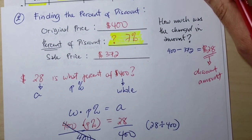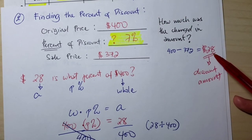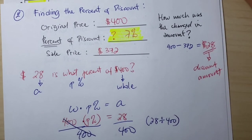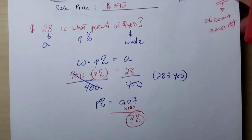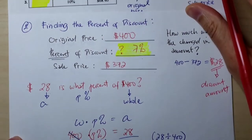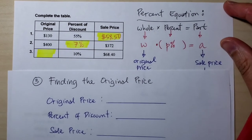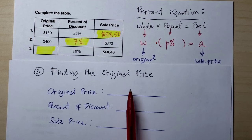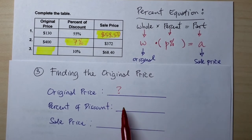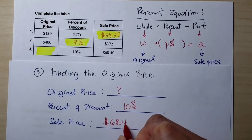So if you take 7% away from $400, you get $28, meaning you only pay $372. The answer for number 2 is 7%. Now let's move on to number 3: finding the original price. The original price is unknown, the percent of discount is 10%, and the sale price is $68.40.